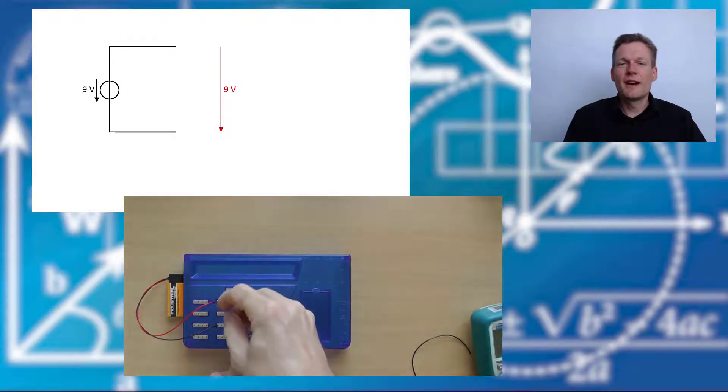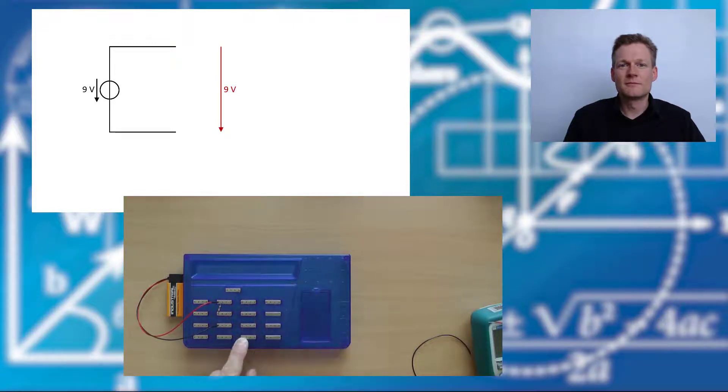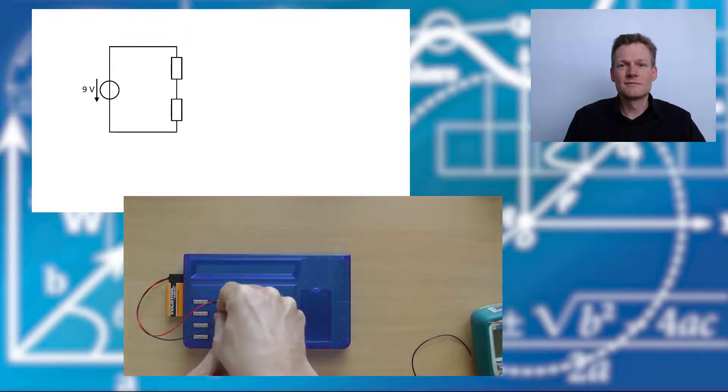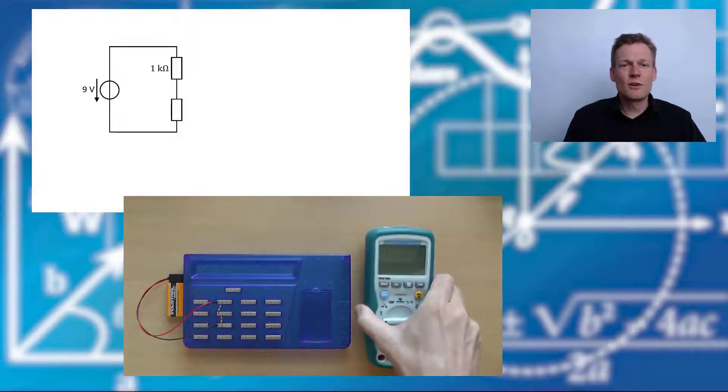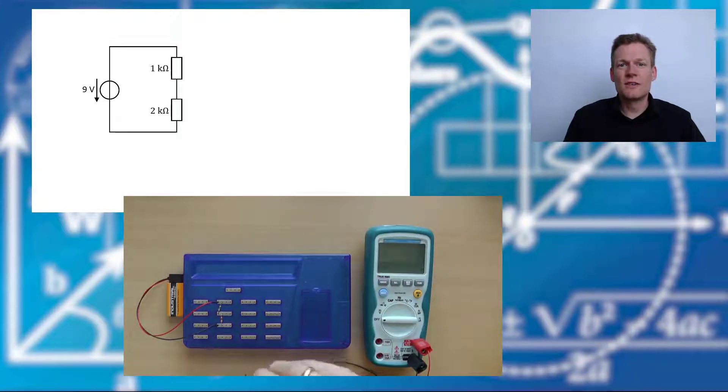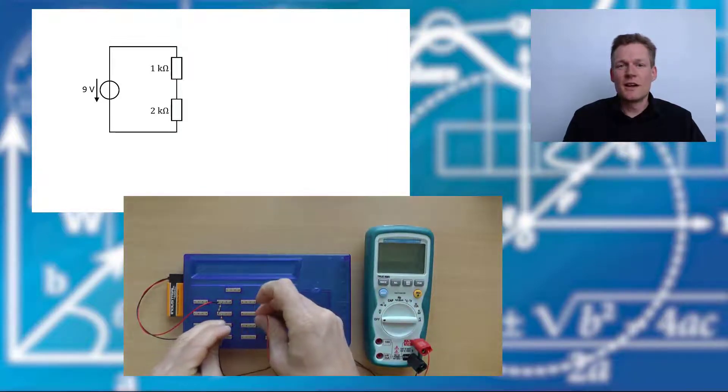Great! Now I take two resistors and build a voltage divider. Okay, the first resistor is a 1 kOhm and the second a 2 kOhm resistor.